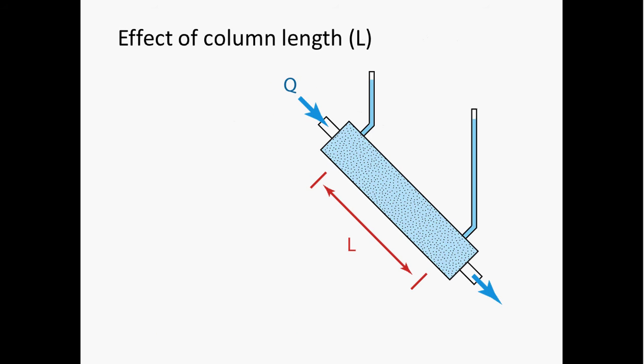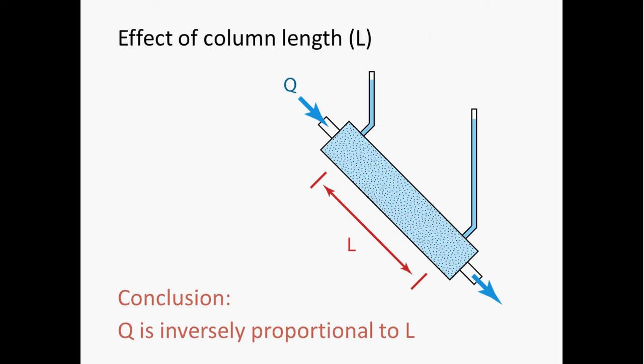What about the length of the tube? Darcy figured out that if you keep the head difference between each end of the tube the same but lengthen the tube, it causes the flow rate to decrease. Imagine the sand tube is one foot long and the difference in head is six inches — that's a steep change, so water flows fairly quickly. But if the tube were ten feet long, that six-inch drop over ten feet isn't nearly as steep, and the water wouldn't move through as fast. So flow through the tube is inversely proportional to length — as length increases, flow decreases.